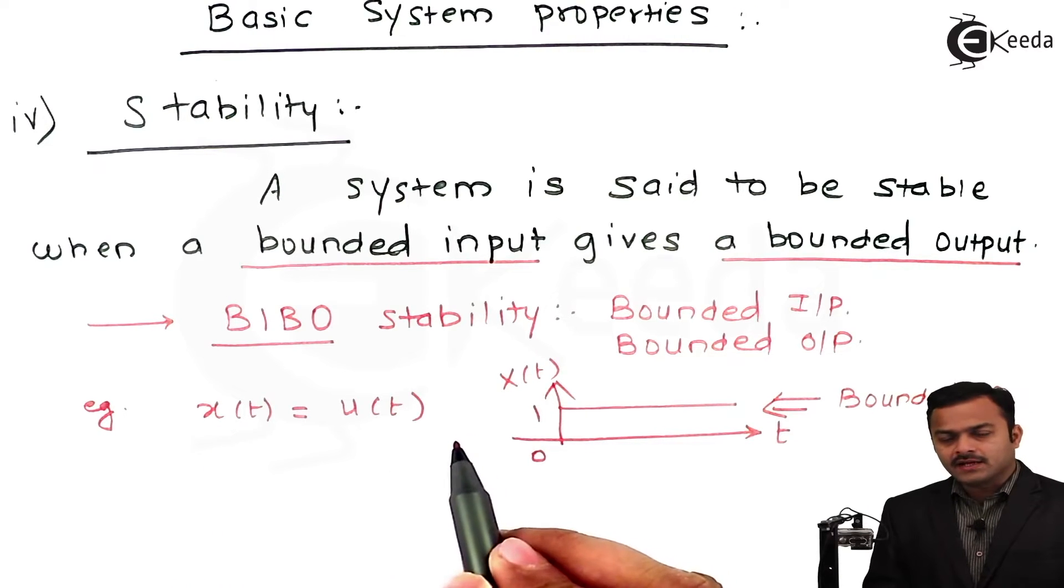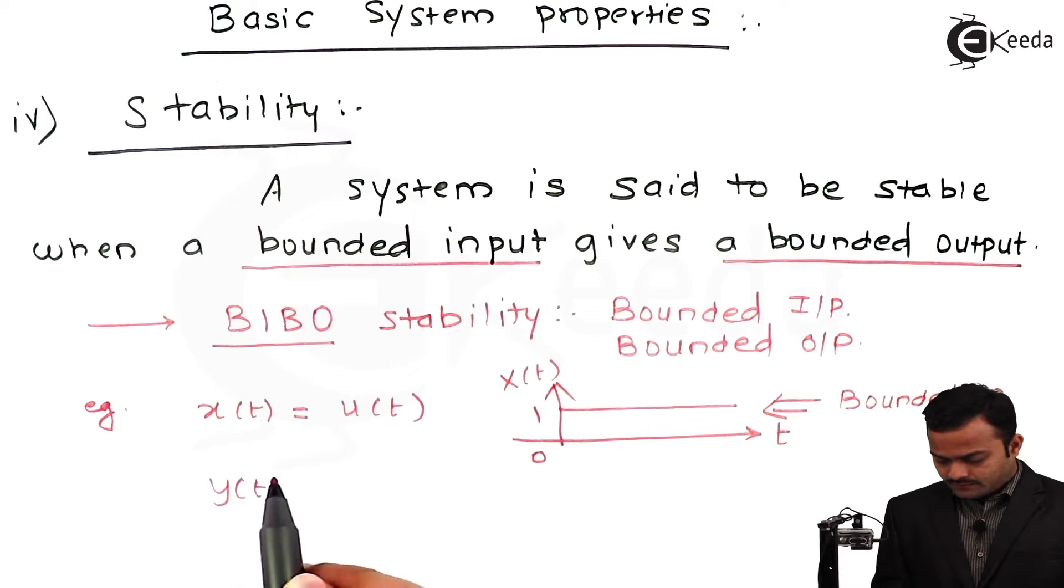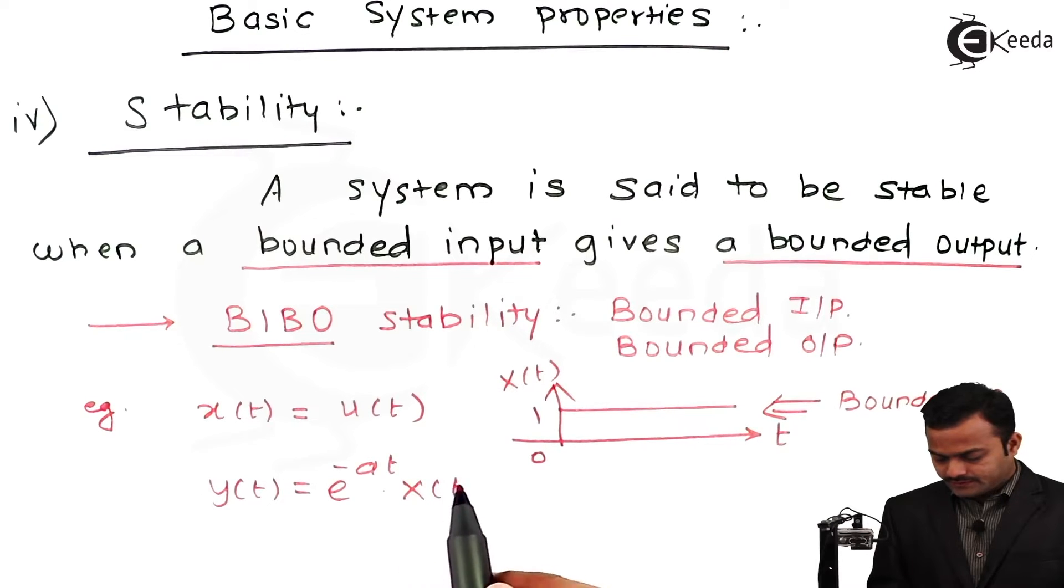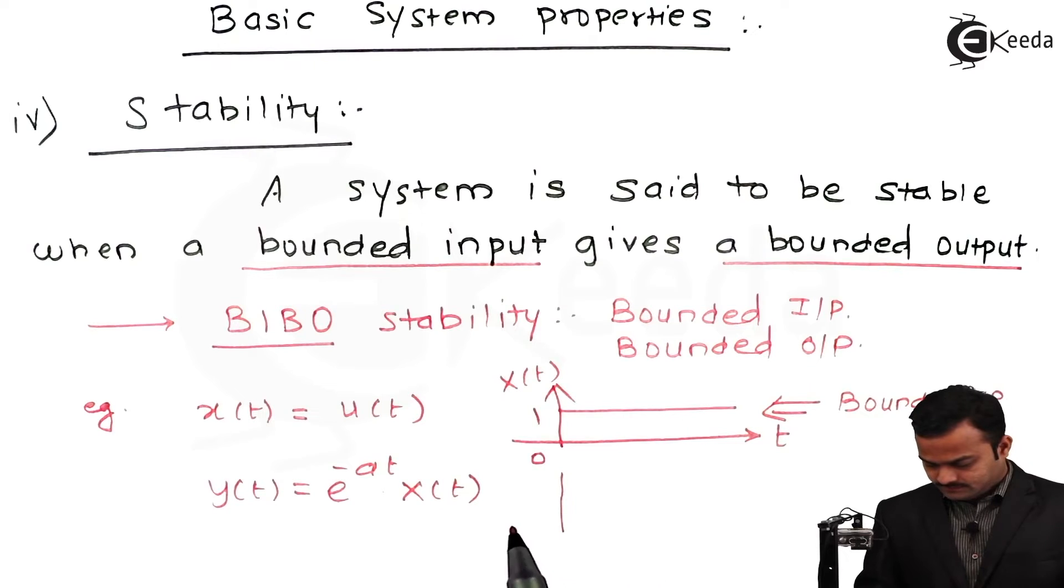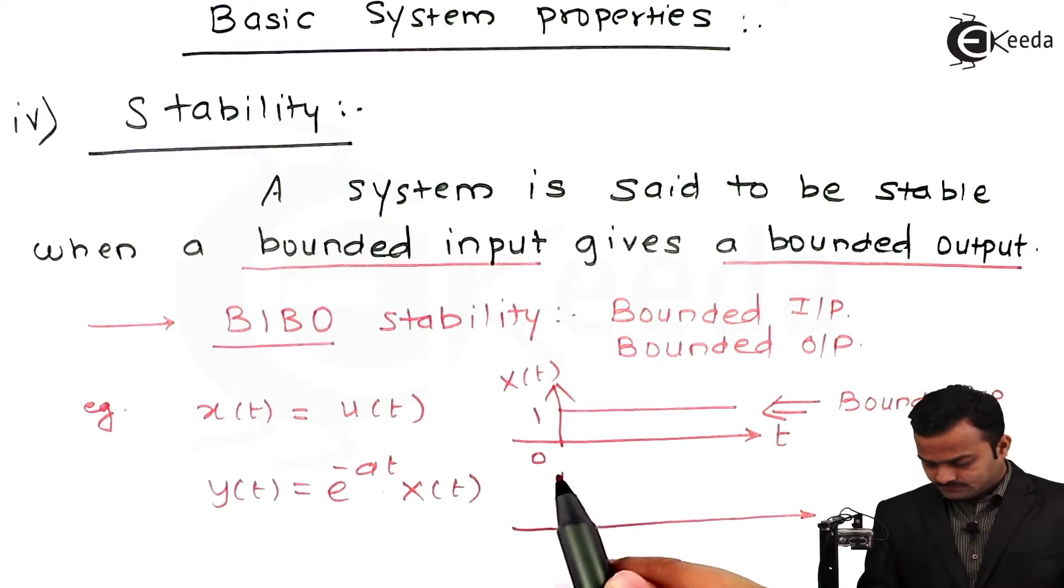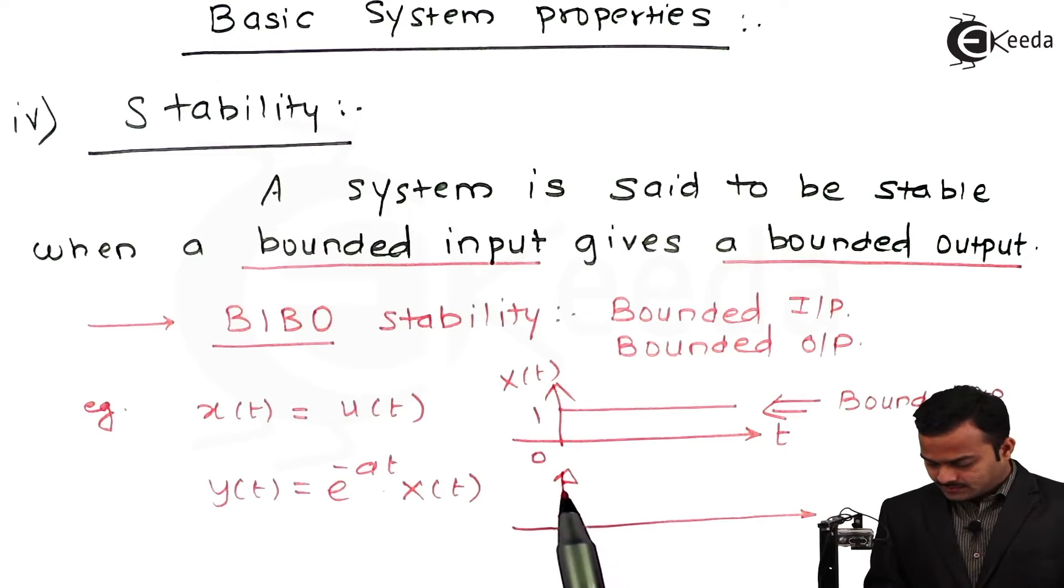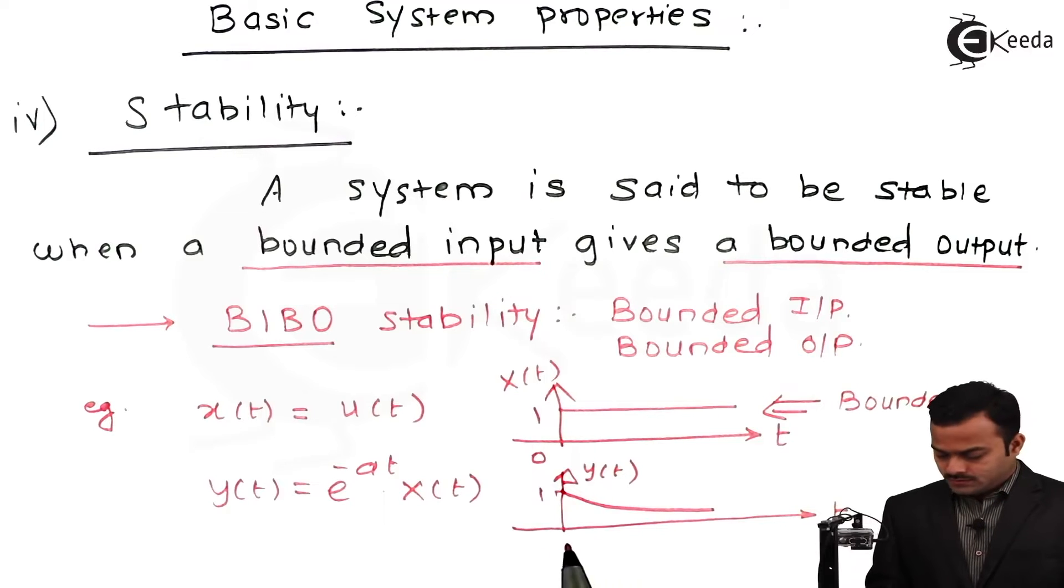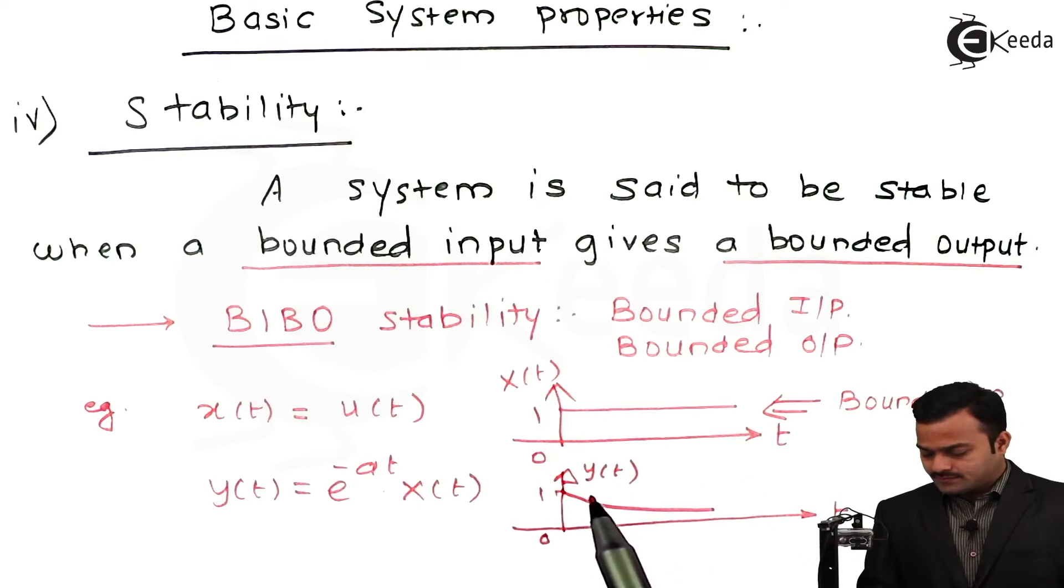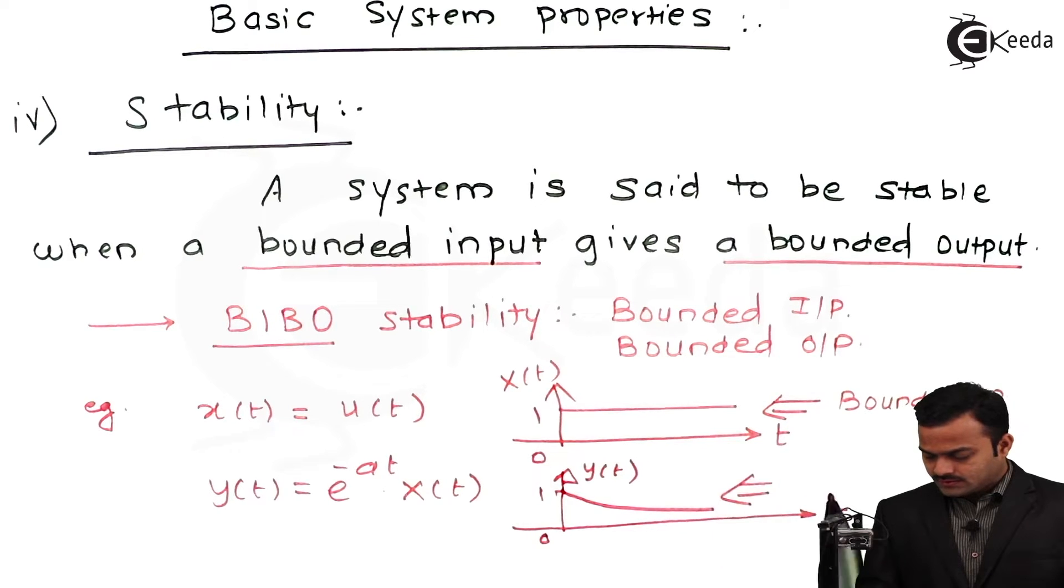If this input signal is given to a system which is given by y(t) = e^(-at) x(t), what we will get at the output side is a plot like this whose value is converging. It becomes 0 at t tending to infinity. So I can call this bounded output.